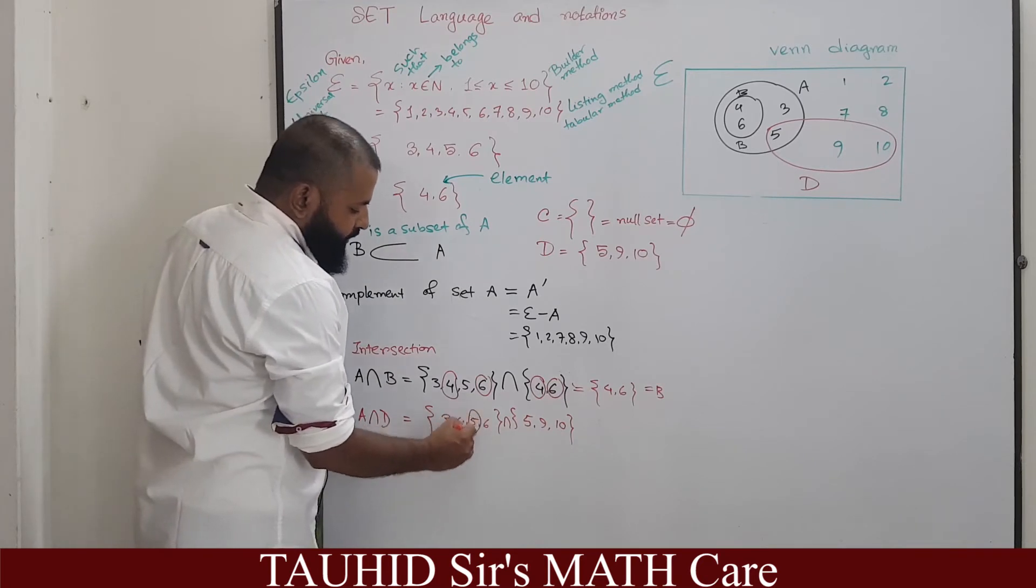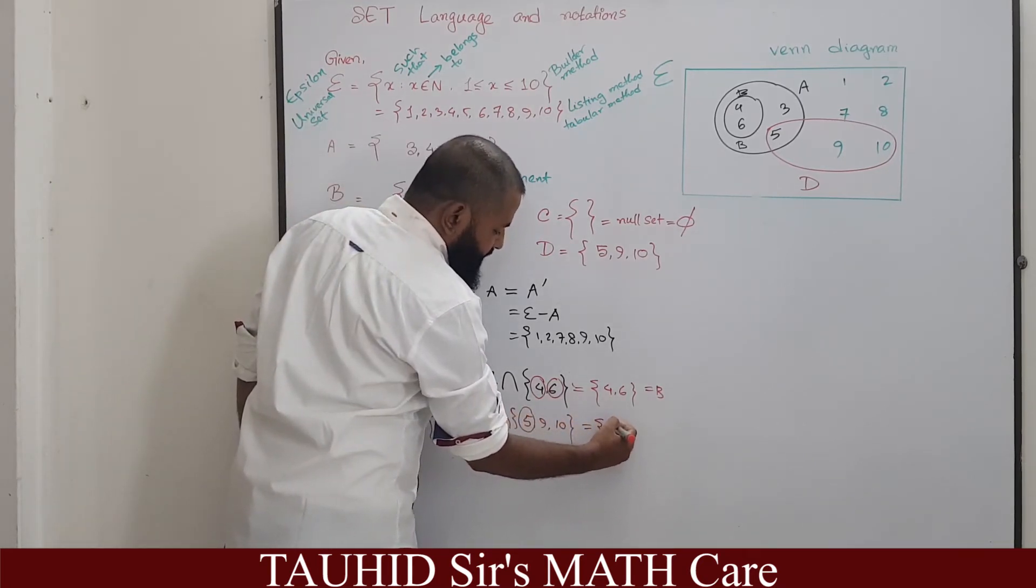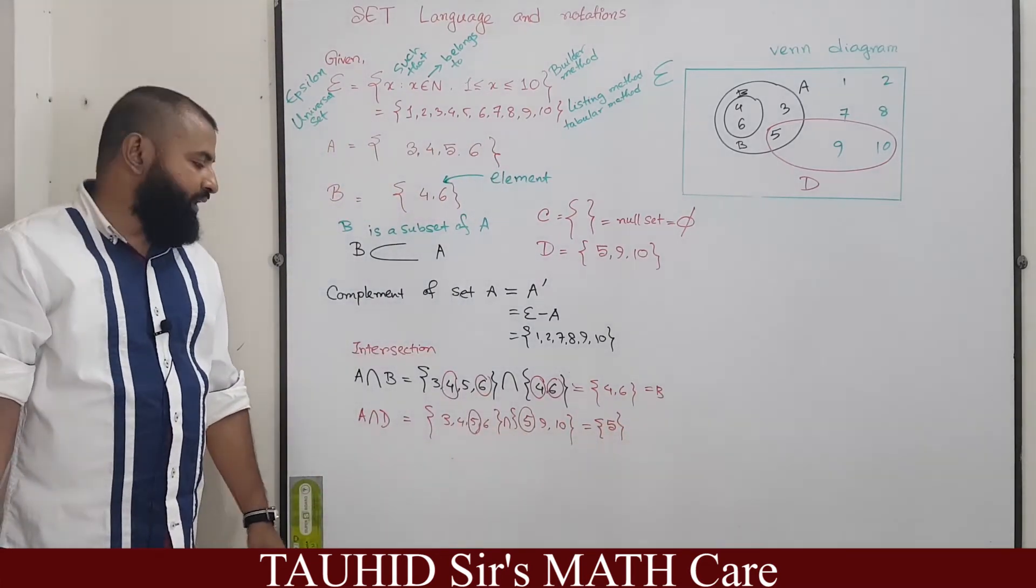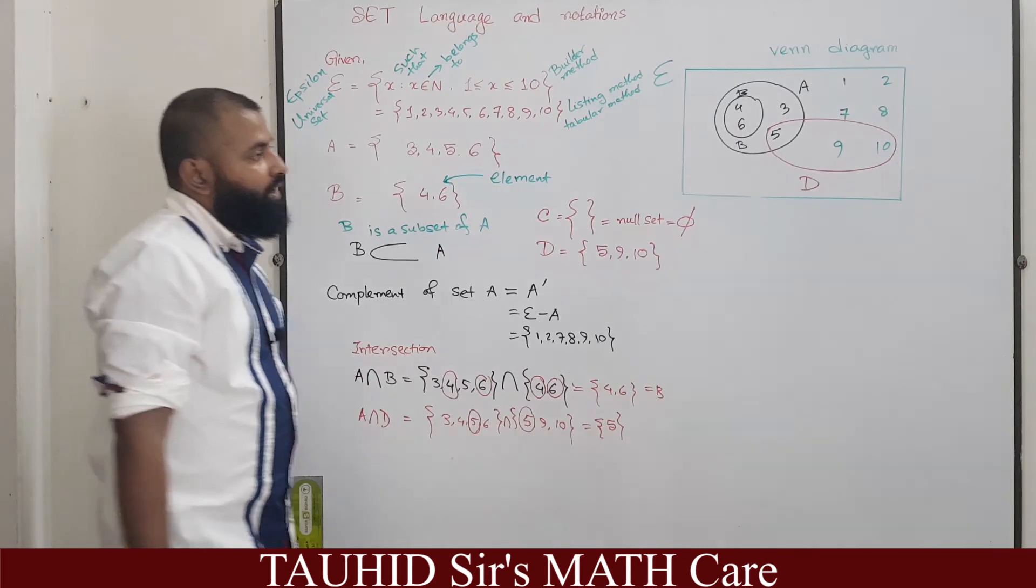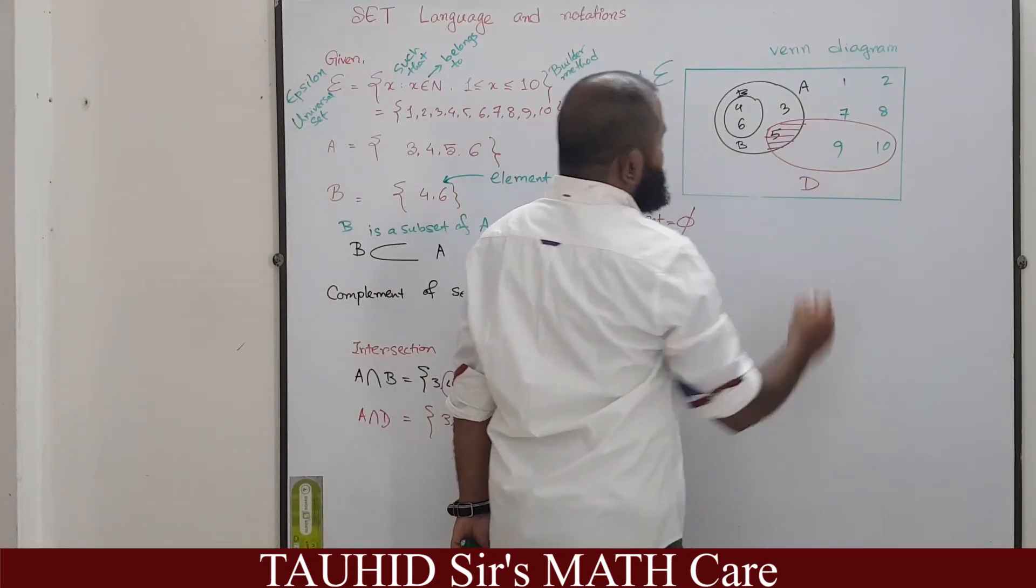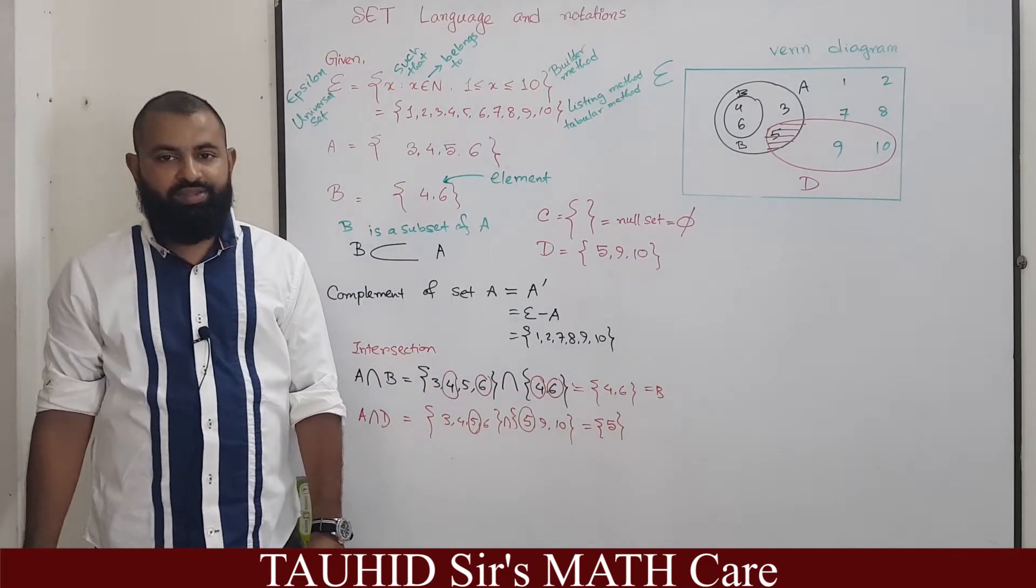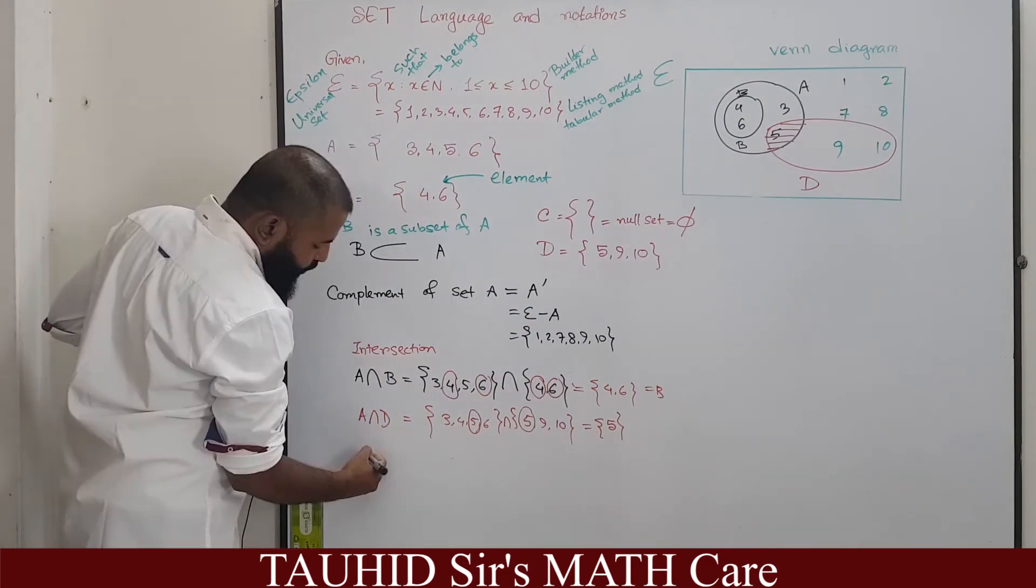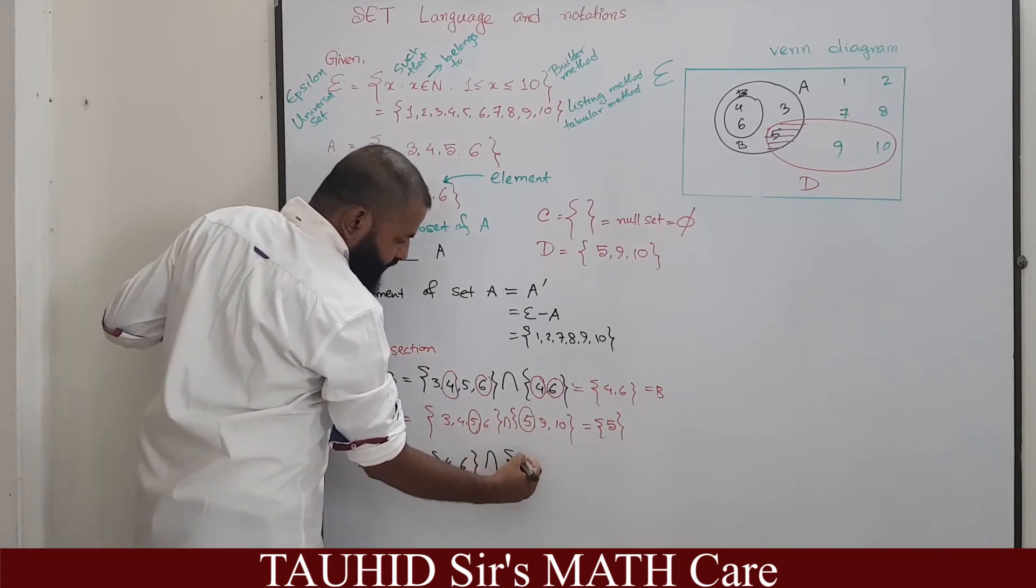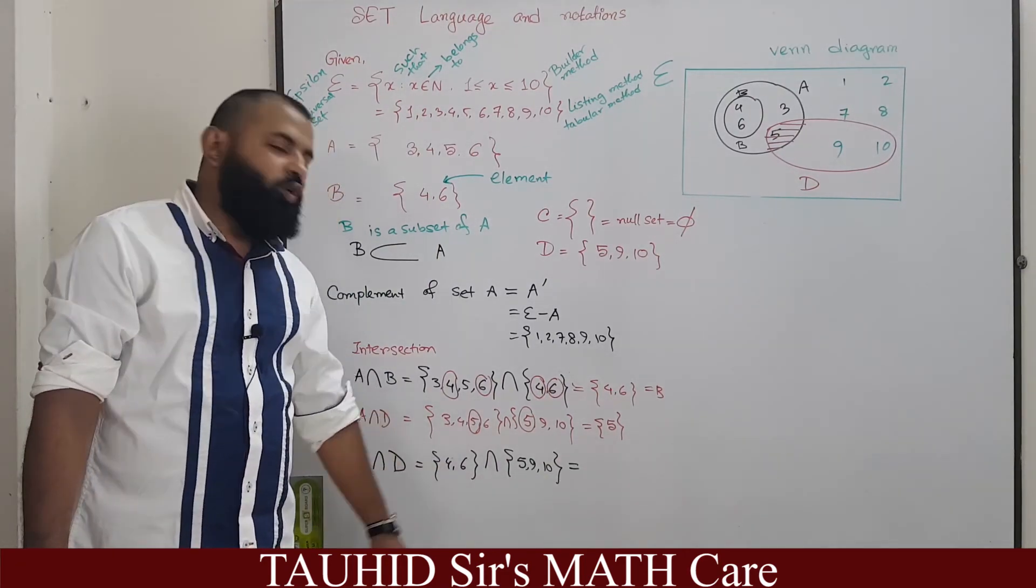Now what is A intersection D? See carefully here, only the 5 is common. So the intersection of A and D gives us a set which contains only one element, 5. And in Venn diagram this is represented by this region, the common region. That is called the intersection.